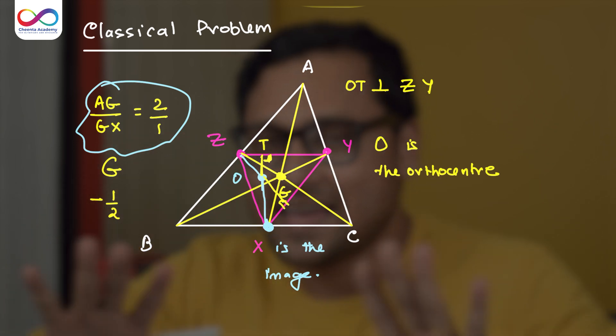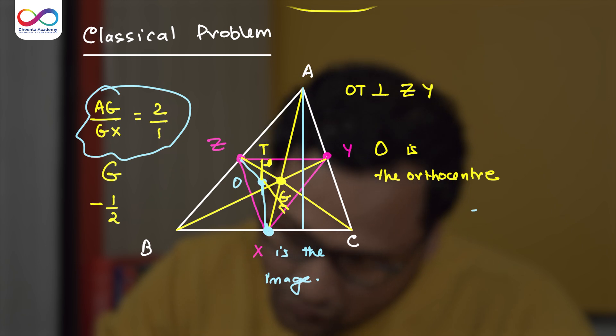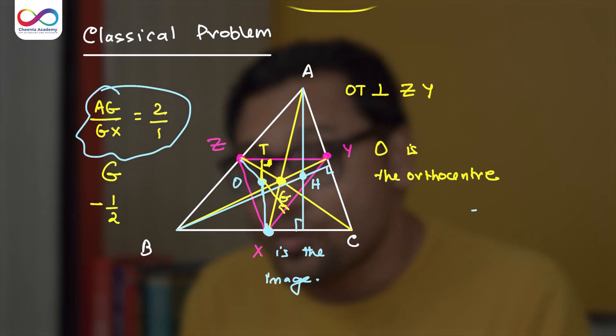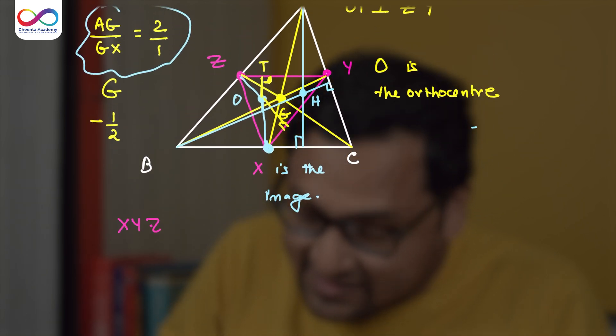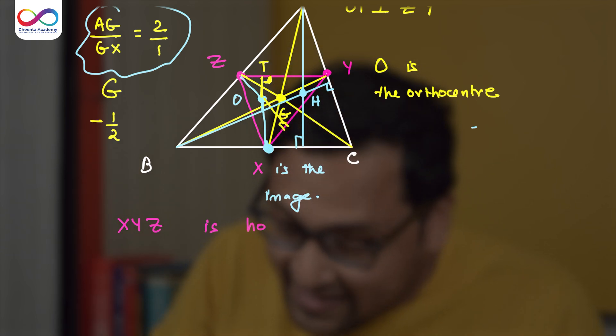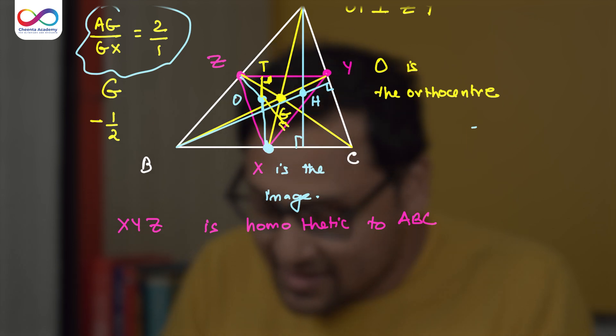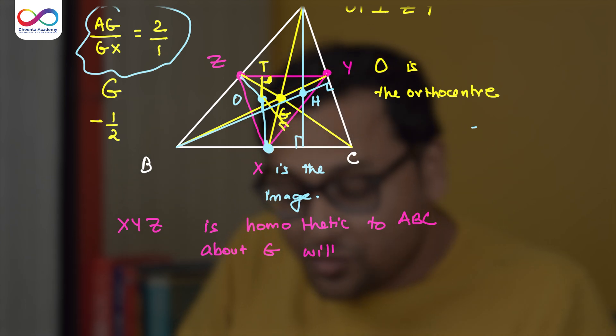One last thing and we will be done. Let's draw the orthocenter of the main triangle. So I drop the perpendiculars like so, like this. I've dropped two perpendiculars and this is the orthocenter H. I know that XYZ this medial triangle is homothetic to ABC the main triangle about G. G is the center of homothety about G with ratio negative half.